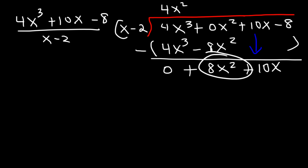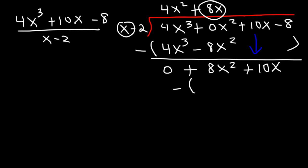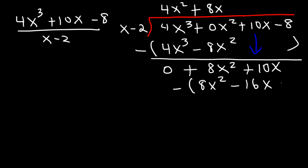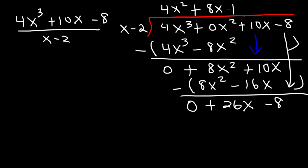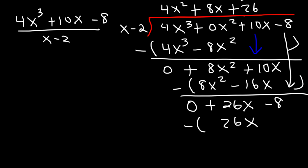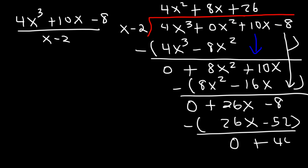Divide 8x squared by x to get 8x. Multiply: 8x times x is 8x squared, and 8x times negative 2 is negative 16x. Subtract: 8x squared minus 8x squared is 0, and 10x minus negative 16x is 10x plus 16x which is positive 26x. Bring down the negative 8. Divide 26x by x to get 26. Multiply: 26 times x is 26x and 26 times negative 2 is negative 52. Subtract: that gives 0 and negative 8 minus negative 52 is negative 8 plus 52, which is positive 44 — the remainder.